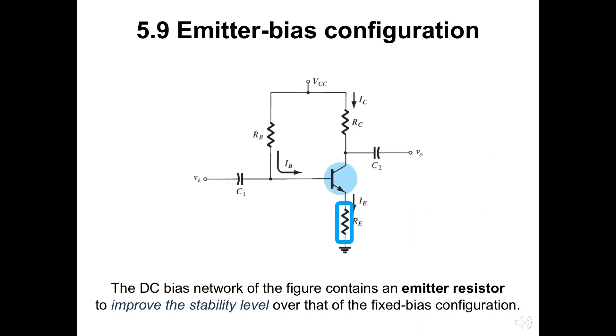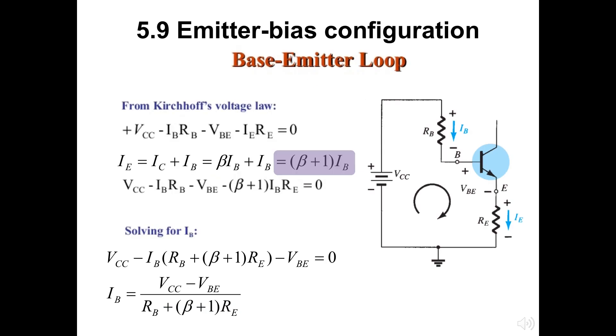The DC bias network of the figure contains an emitter resistor to improve the stability level over that of the fixed bias configuration. For the base emitter loop, by applying the KVL we can have the four elements of the voltages. Just be careful about the base current emitter current's direction before starting to analyze the circuit with KVL.